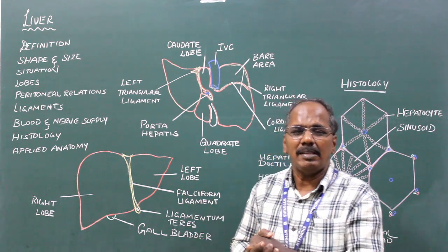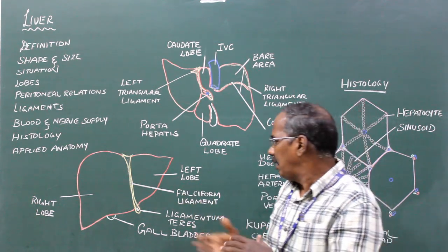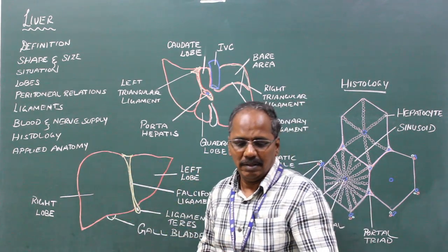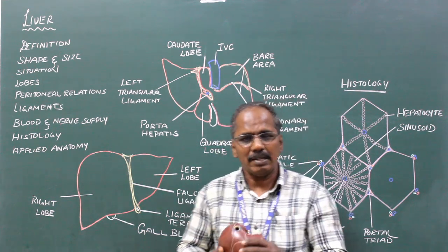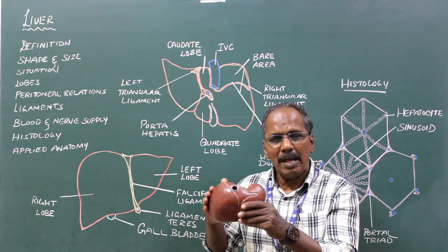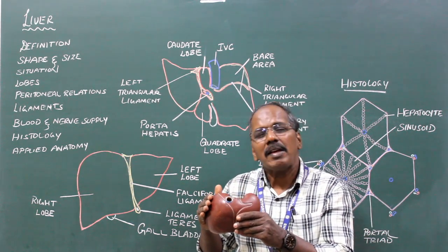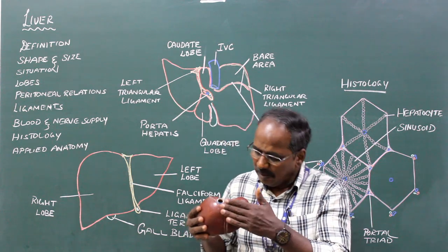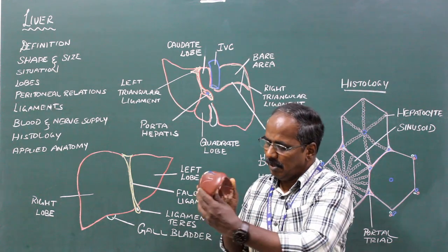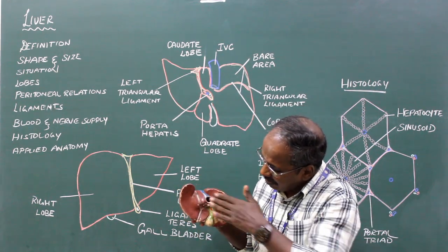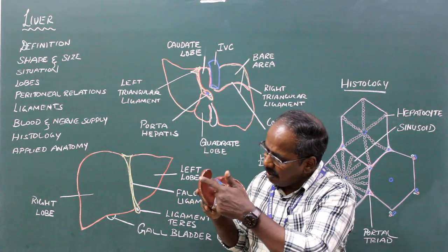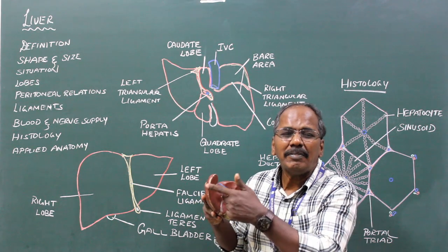Shape and size. It is a wedge-shaped organ. It has an apex, a base or right lateral surface, and four surfaces: anterior surface, superior surface, posterior surface, and inferior surface. It has a well-defined inferior border.